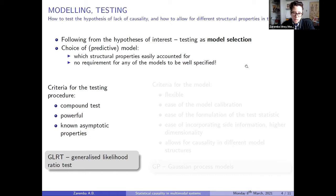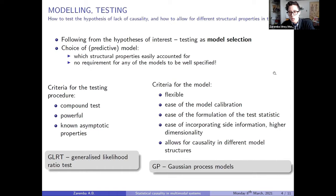And I have chosen a generalised likelihood ratio test. In terms of the model, I wanted something that is flexible, that has ease of model calibration, that allows easy formulation of the test statistic. It allows incorporating of site information, higher dimensionality, and different model structures. Gaussian processes are very, very flexible and basically meet those criteria.